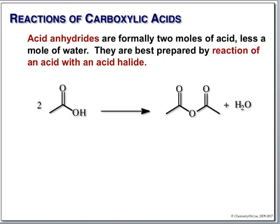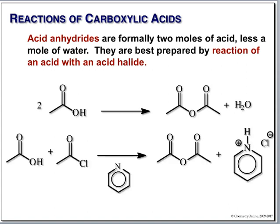Acid anhydrides are reactive, just like acid halides. The simplest way to make one is to take two carboxylic acids in the presence of an acid catalyst, clip out a mole of water, and use a Dean-Stark apparatus to drive it to completion. However, the simplest method is to use an acid halide in the presence of pyridine — pyridine is a base/solvent. You get the anhydride, and pyridinium chloride dissolves back in pyridine. Probably the simplest, easiest way to make anhydrides.